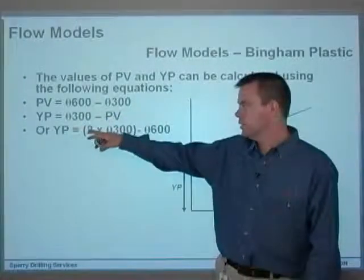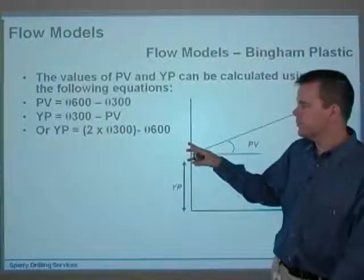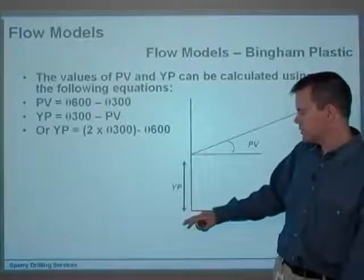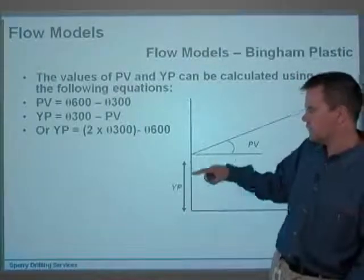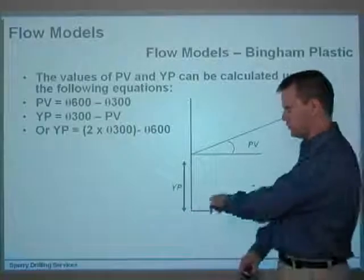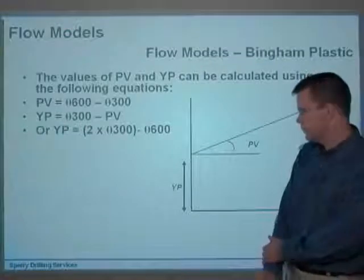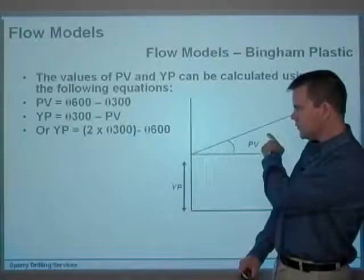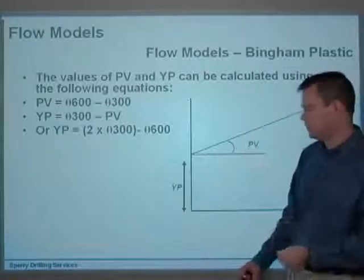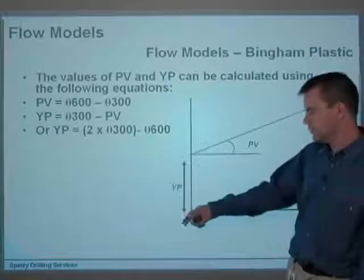And YP is theta 300 minus the PV value, or it could also be expressed as two times the 300 value minus the 600 value. Either way, you end up with the yield point. And the yield point, as I said, it's the thing that shifts the line up. If the YP was zero, then that line would go straight through the origin and would be describing what's known as a Newtonian fluid, because we've got a straight line. PV is pretty much the viscosity of that fluid, or the thickness of the fluid.